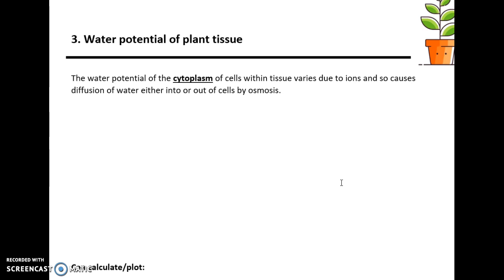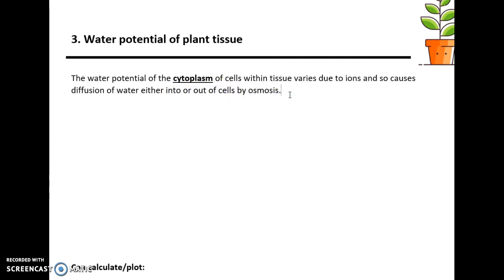The water potential of a plant is basically the water potential of the cytoplasm of the cells within the plant, and this water potential will change due to ions and solutes dissolved in the cytoplasm. Because of that, water will either move in or out of the cells by osmosis.